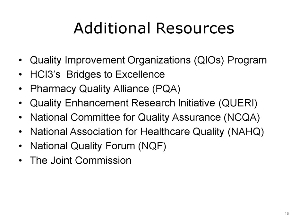The Joint Commission's accreditation includes its key quality measures program of top performers, which recognizes accredited hospitals that attain excellence on accountability measure performance. The program is based on data reported about evidence-based clinical processes for certain conditions, including heart attack, heart failure, pneumonia, surgical care, children's asthma, inpatient psychiatric services, venous thromboembolism, stroke, perinatal care, immunization, tobacco treatment, and substance abuse. The Joint Commission monitors hospitals to ensure they achieve the required reporting standards.